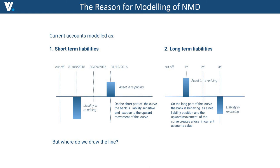It is not easy to model this product because it is very dynamic. When rates go up to some extent, customers behave in a certain way; beyond a certain level, clients start to change their behavior. It depends on whether they are rate shoppers or loyal customers who have kept money with the bank for 30 years and are not going to withdraw even if rates go up. This kind of customer we call the lazy client, or lazy money.